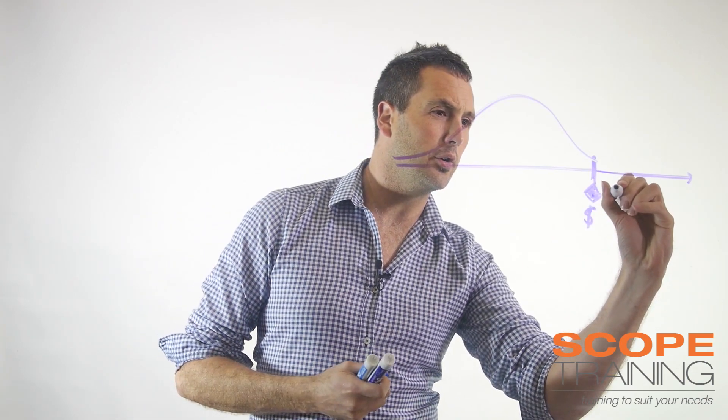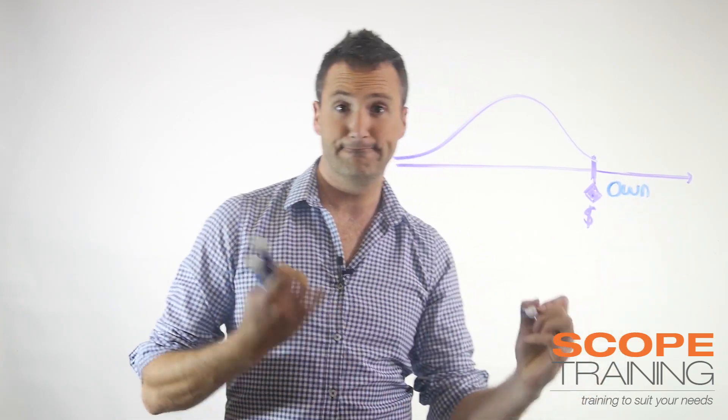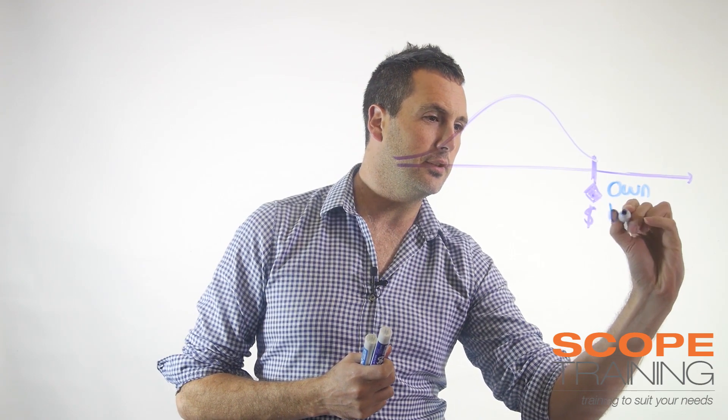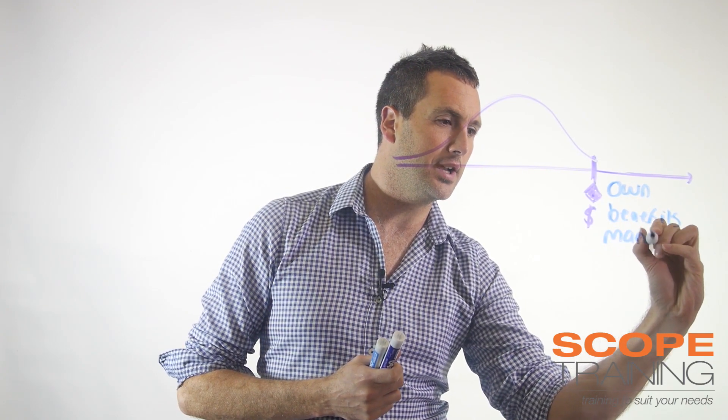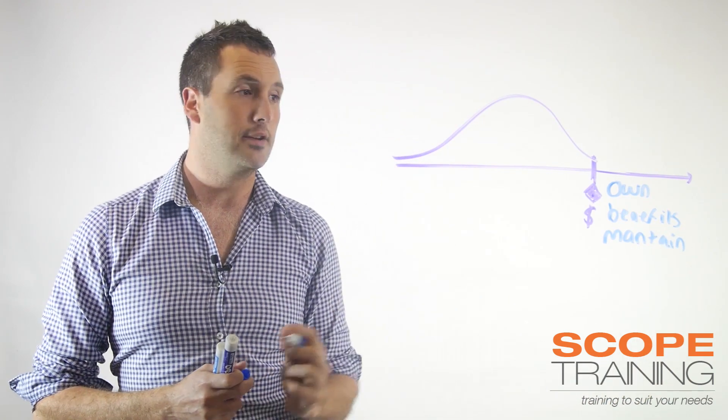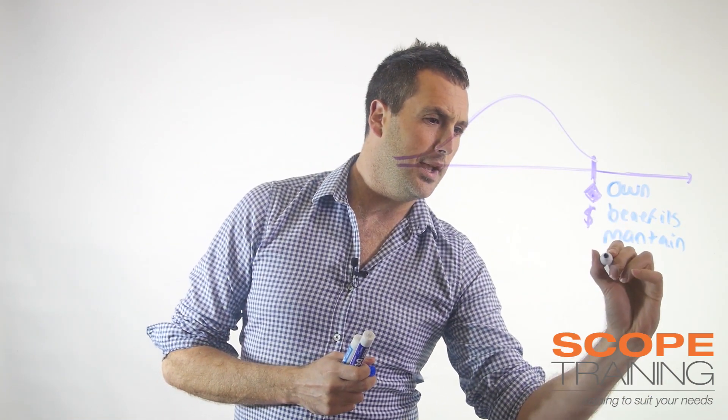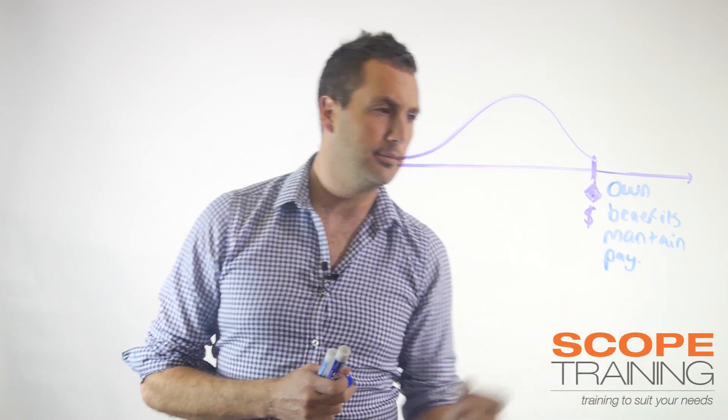Number one is who's going to own that stuff, who's going to get the benefits, who's going to maintain it, and who's going to pay for it.